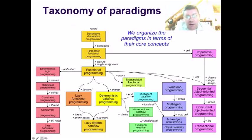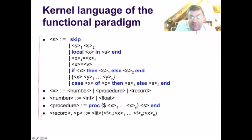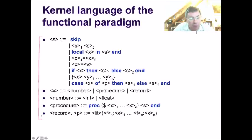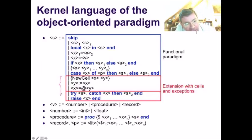The paradigms are organized in terms of the core concepts of the kernel language. We start with a very simple one: the functional paradigm. This is the base — it gives you all the basic programming concepts you need for writing programs. Then we extend this to object-oriented programming by adding state.